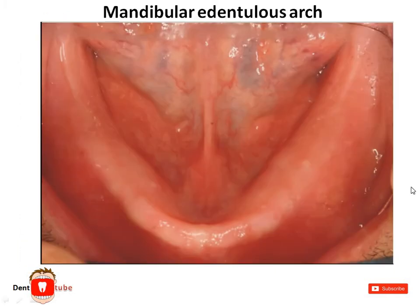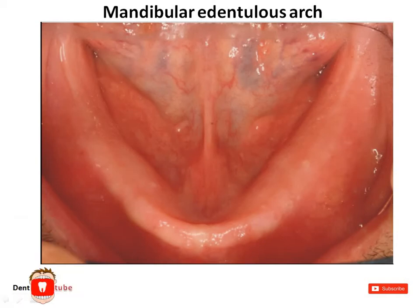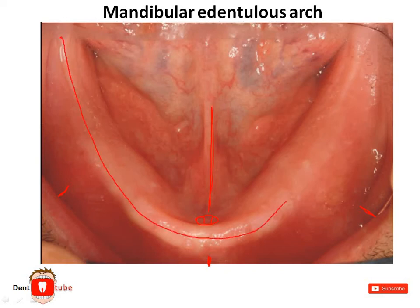Now let's correlate those structures in this clinical picture. Here is the labial frenum, here is the buccal frenum, and this is the lingual frenum. Here are the genial tubercles. This is the crest of the residual alveolar ridge. Now we can see a pear-shaped structure over here — this is the retromolar pad.